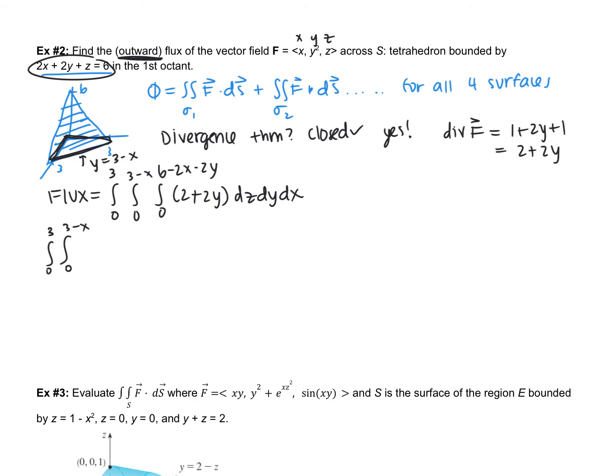If we integrate with respect to z, I'm going to have 2 multiplied by 6 minus 2x subtract 2y. Add 2y multiplied by 6 subtract 2x subtract 2y. So, then if I do a little simplifying, that's going to give me negative 4y squared, subtract 4xy, subtract 4x, add 8y, add 12 dy dx.